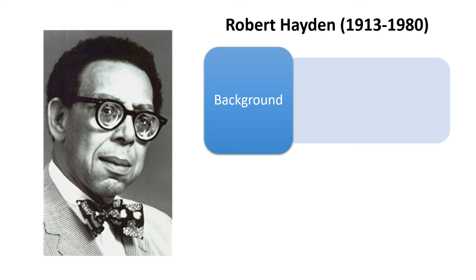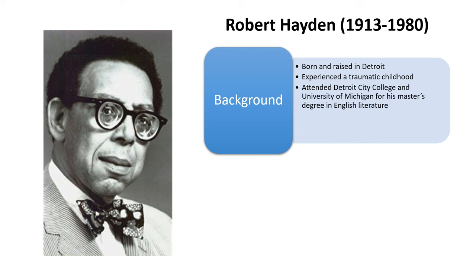Robert Hayden was a 20th century writer born and raised in Detroit, and he experienced a traumatic childhood, which informed his later writing. He first attended Detroit City College, then went to the University of Michigan to earn his master's degree in English literature.